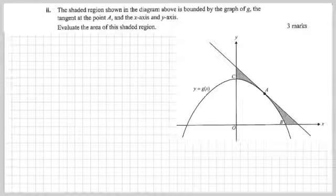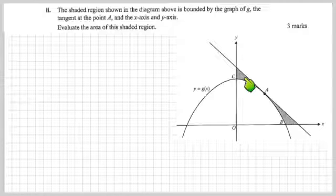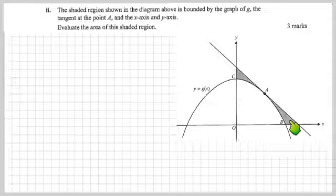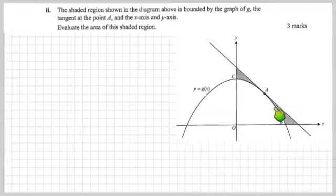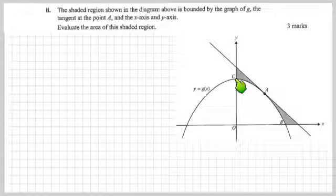Now the shaded region shown in the diagram is bounded by the graph of g, the tangent at point A, the x-axis, and the y-axis. They're talking about this bit here and this bit here. To evaluate the area of this shaded region, I think I'd like to work out the area of this triangle — which is going to be very easy — and then subtract the area the parabola makes with the x and y axes.